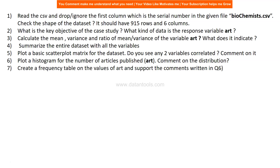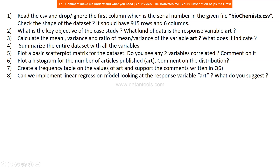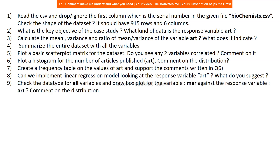Create a frequency table on the values of 'art' to support the comments from the previous question about the histogram shape. Then consider whether we can implement a linear regression model — given what you observe in the response variable 'art', write your observations on whether it's suitable and why. Also check the data types for all variables.